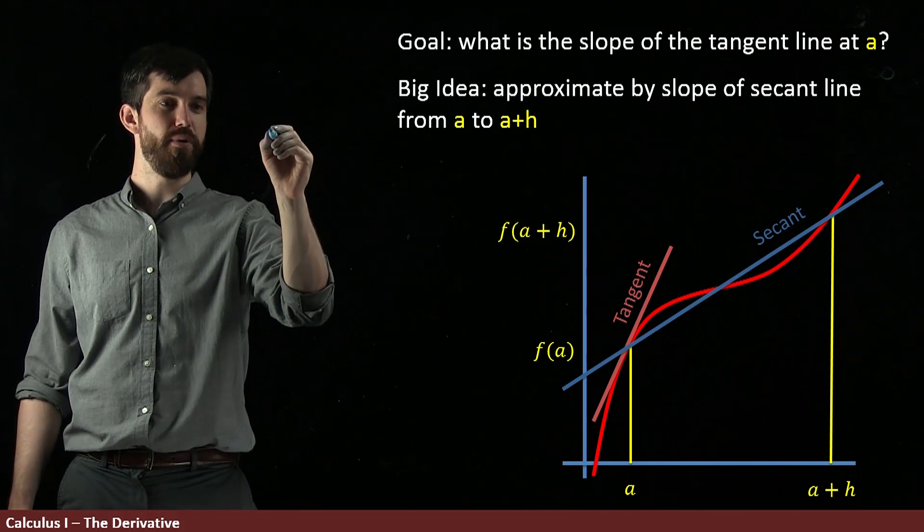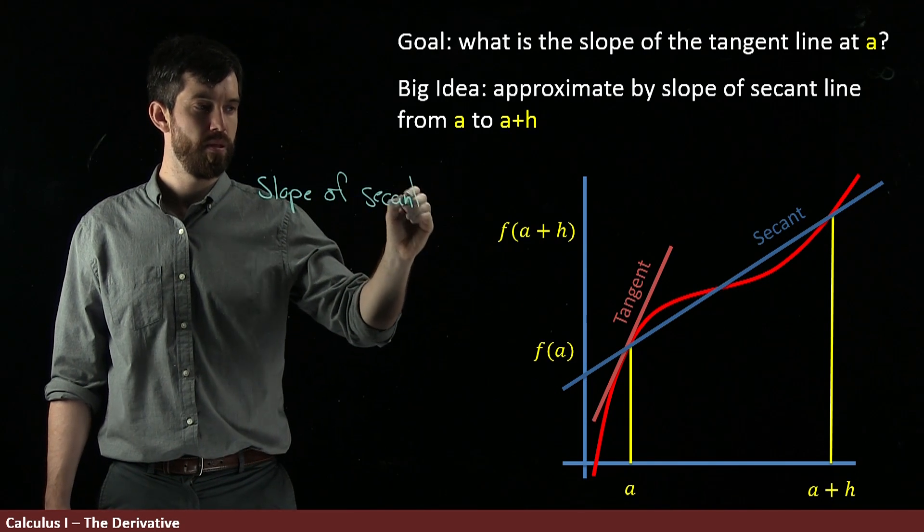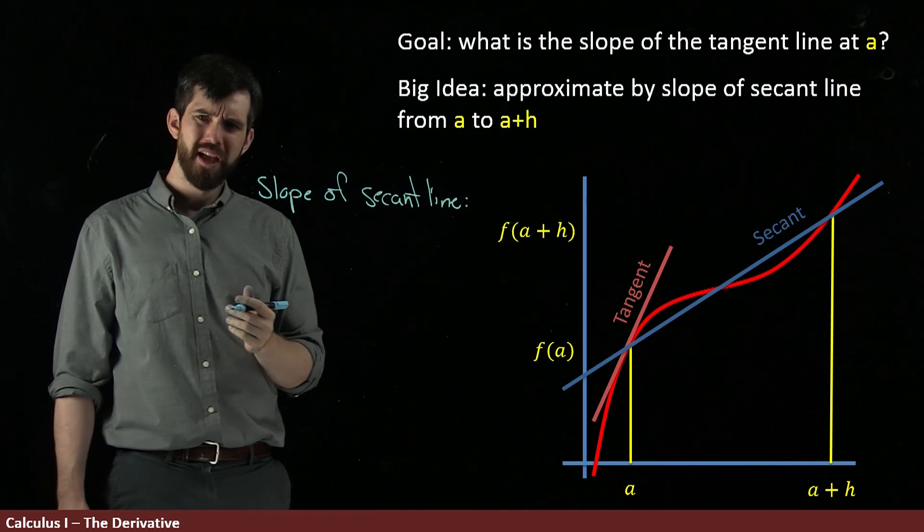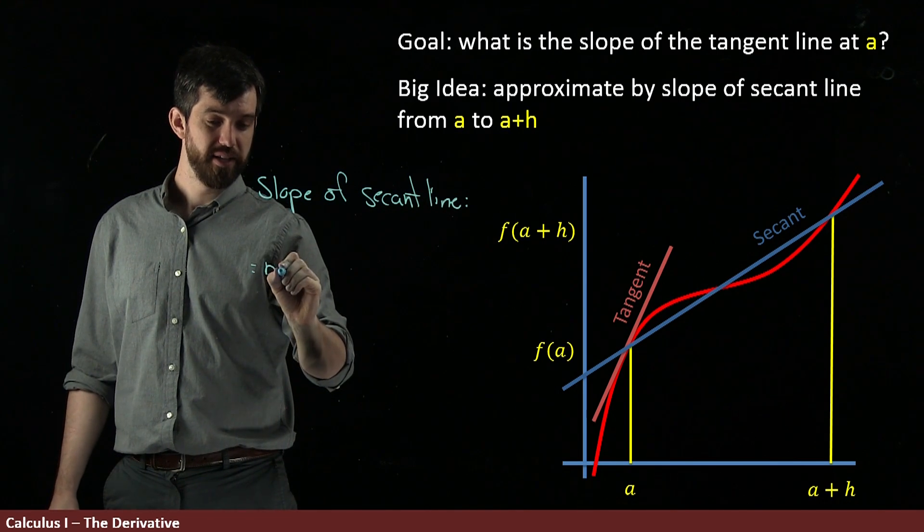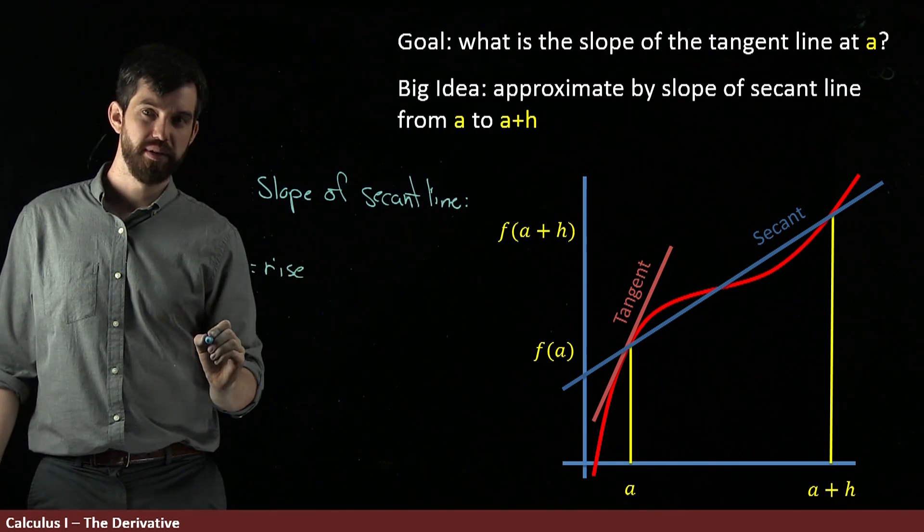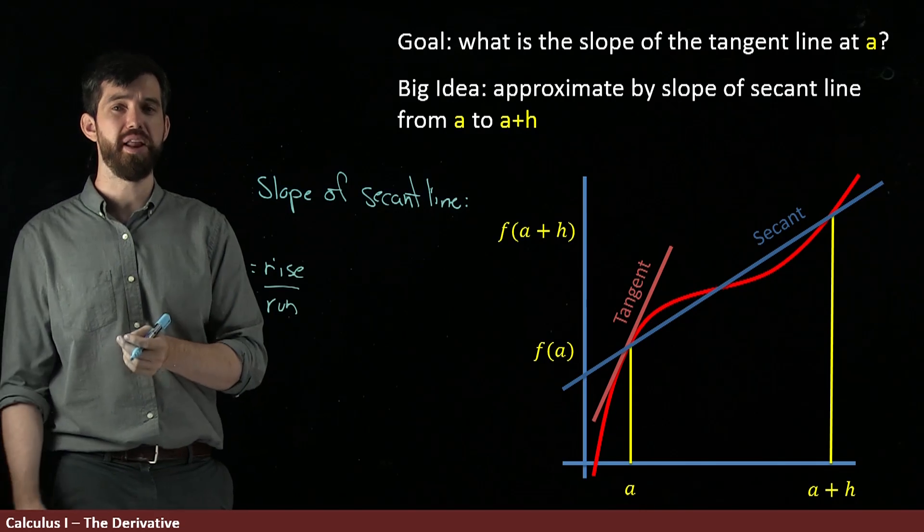So let's try to figure out what that is. I want to figure out the slope of my secant line. Well, the slopes of all lines are going to be some rise divided out by some run here. So I've got to figure out what the rise and what the run is.